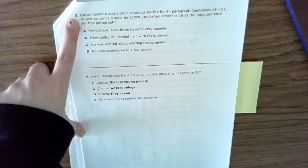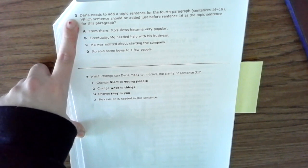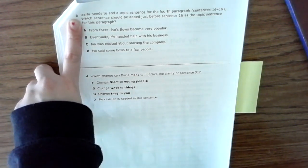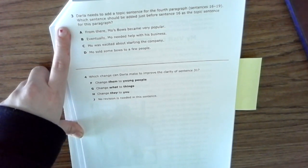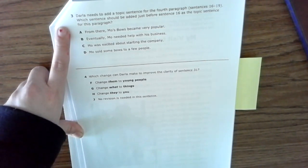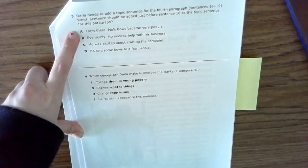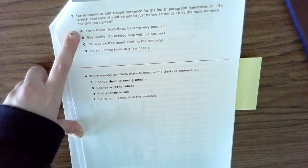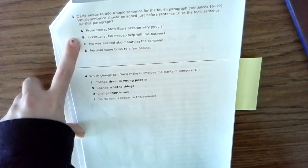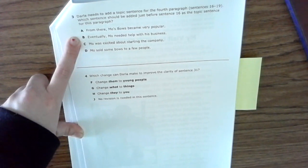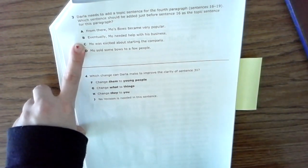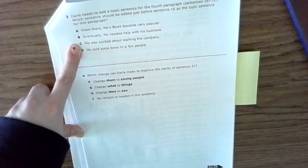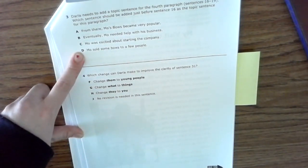Number three: Darla needs to add a topic sentence for the fourth paragraph, sentences 16 through 19. Which sentence should be added just before sentence 16 as the topic sentence for this paragraph? A: From there Moe's bows became very popular. B: Eventually Moe needed help with his business. C: Moe was excited about starting the company. D: Moe sold some bows to a few people.